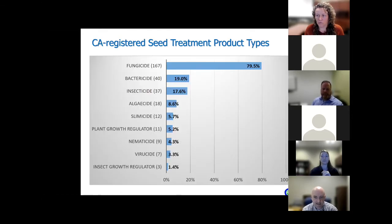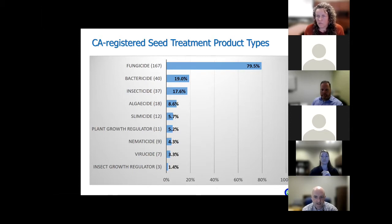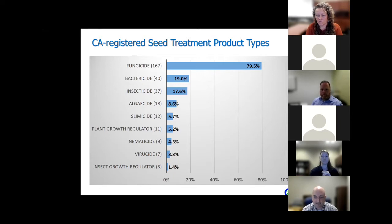Why do people treat seeds with pesticide products? The simple answer is that lots of things eat seeds and seeds are highly susceptible to fungus and bacteria, all of which can be managed by the application of pesticides. California registers a variety of different seed treatment product types, and many products are registered with multiple use types, such as combination fungicide and insecticide products. Fungicides are by far the most common type, with nearly 80% of seed treatment products having fungicidal claims. The next most common are bactericides and insecticides, but at much lower percentages. This is just a survey of registered products and does not represent popularity or how much they are used.